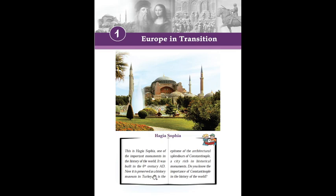Dear students, welcome to Social Science class. Today we shall discuss Europe in Transition. Europe is one of the seven continents on the earth: Europe, Asia, Africa, North America, South America, Australia, and Antarctica.